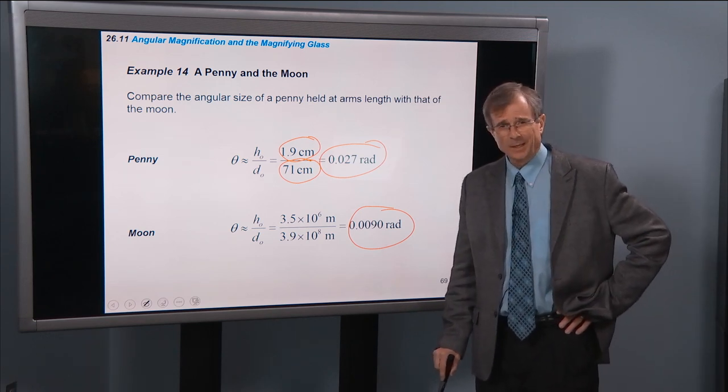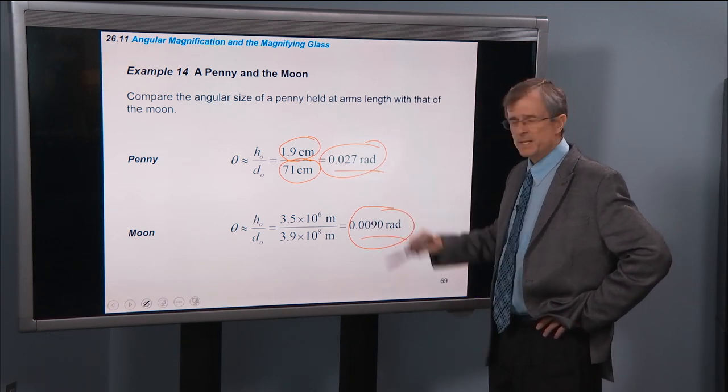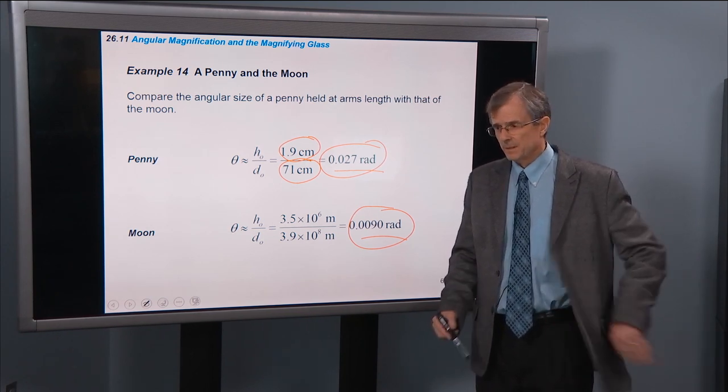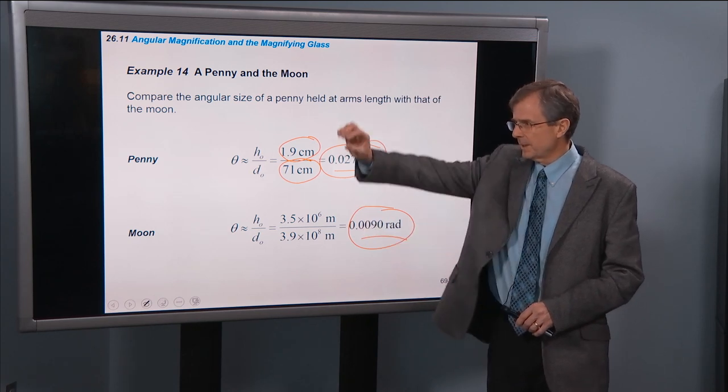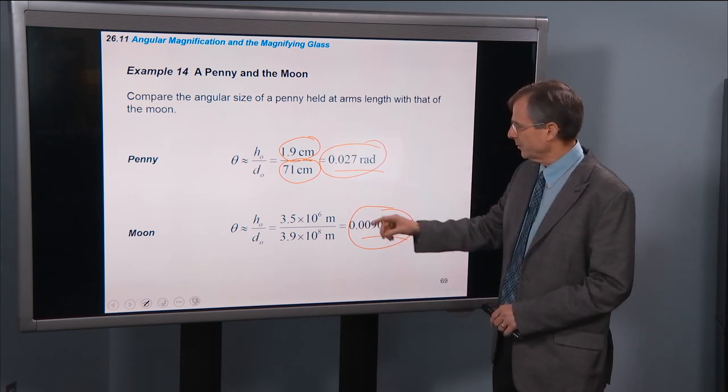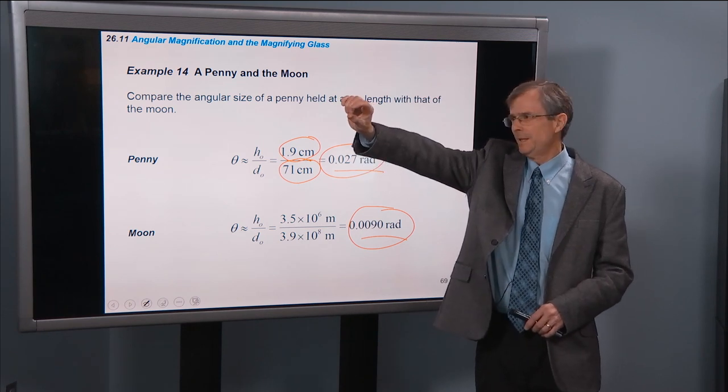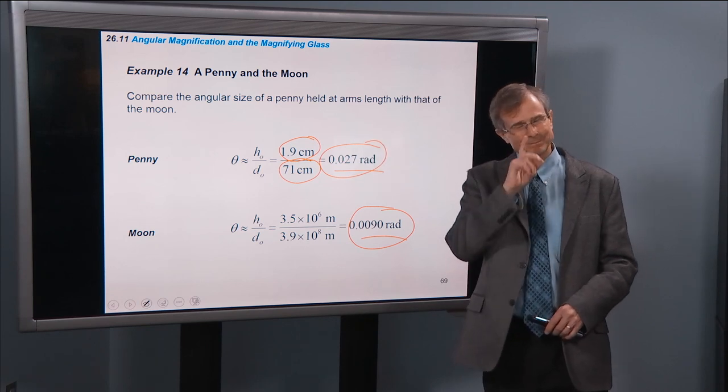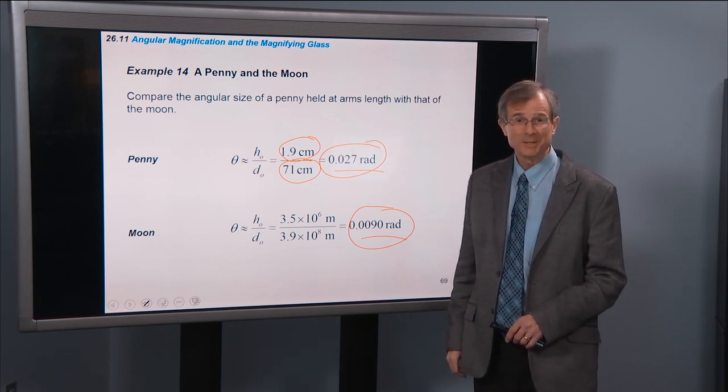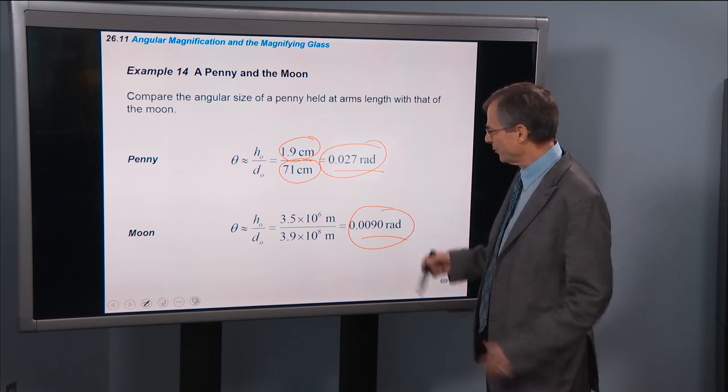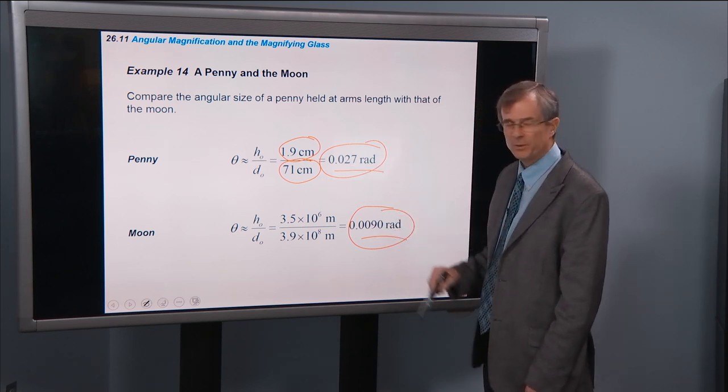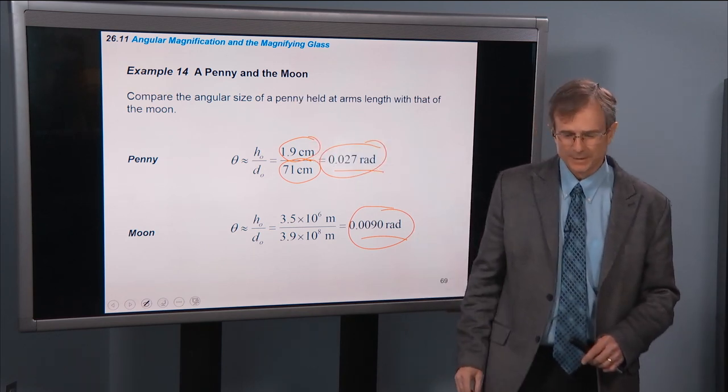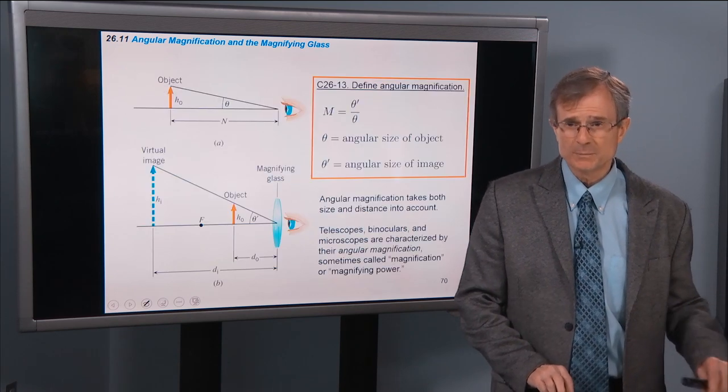And you say, well, hang on just a second. That's smaller than the size of a penny held at arm's length. And that means that I can easily, in fact, I can fit three full moons in the width of a penny held at arm's length. And you say, I don't believe it. And I say, go out and try it. And I'll make a believer out of you. You can fit three full moons, three times 0.009 is about 0.027. You can fit three full moons into the size of a penny held at arm's length. The moon isn't very big in the sky, even though it seems big, it seems to look big.